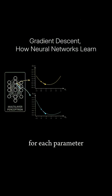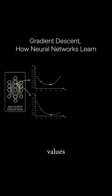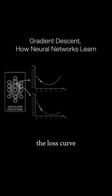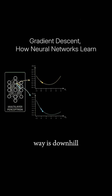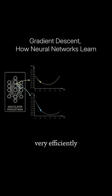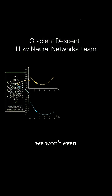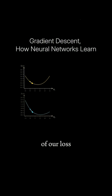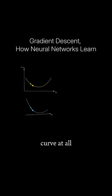For each parameter, instead of computing the loss across a range of values, we can compute the slope of the loss curve, telling us which way is downhill in each direction and how steep the descent is. It turns out that we can compute these slopes very efficiently — we won't even have to compute the actual values of our loss curve at all.